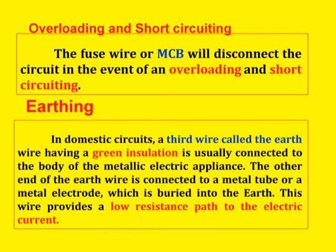Next, earthing. In domestic circuits, a third wire called the earth wire has green insulation. It is usually connected to the body of the metallic electric appliance. The other end of the earth wire is connected to a metal tube or metal electrode which is buried into the earth. This wire provides a low-resistance path for the electric current.